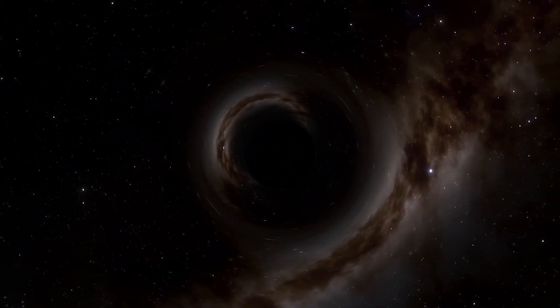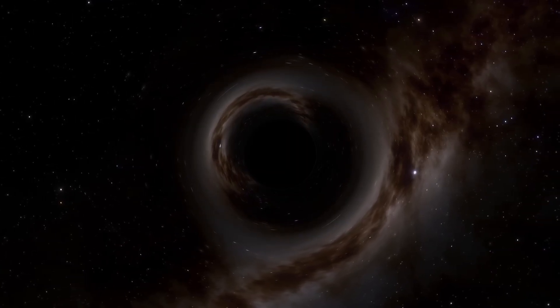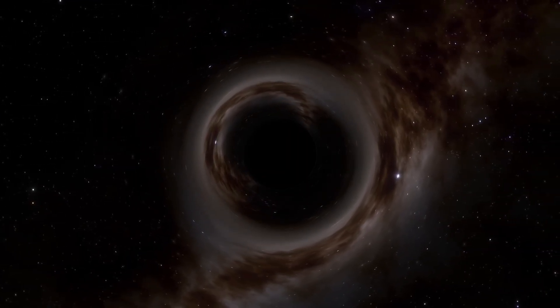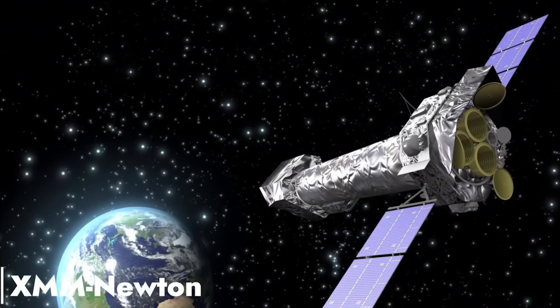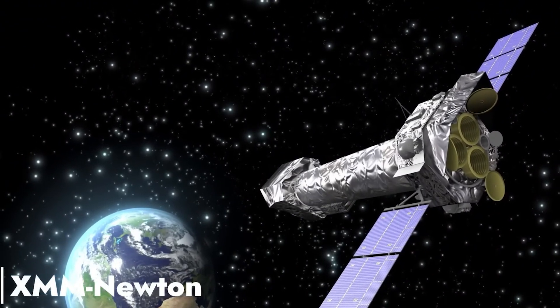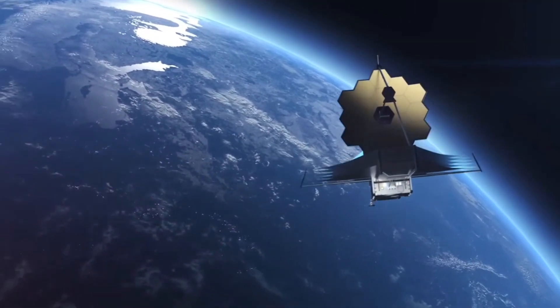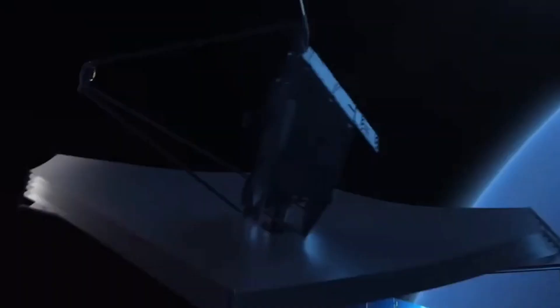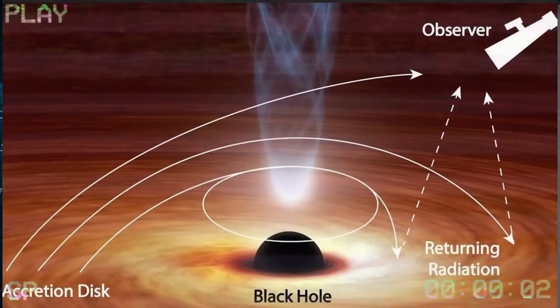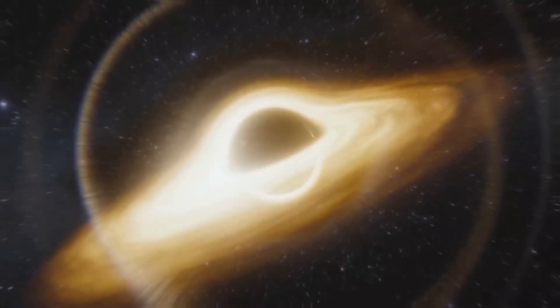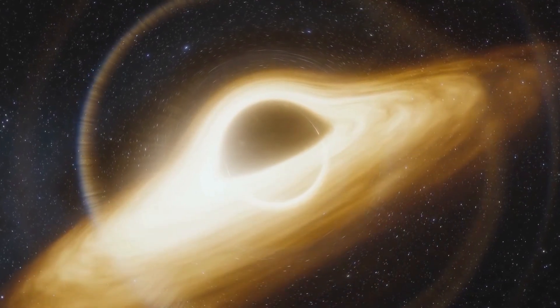But how has this revolutionary discovery been achieved? The story centers on two impressive space telescopes, the XMM-Newton operated by the European Space Agency, ESA, and the James Webb Telescope operated by NASA. These telescopes were focused on a supermassive black hole and put on quite a spectacle for several days. They observed fascinating X-ray flares emitted by the scorching hot corona surrounding the black hole.